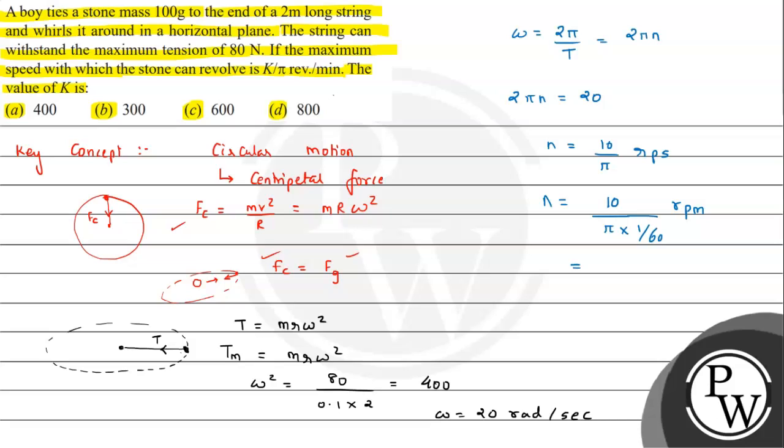From here, this value comes out to be 600 by pi revolution per minute. So on comparing, we can say, therefore, k has the value 600. So this is the answer for this question. I hope you understood the solution. All the best.